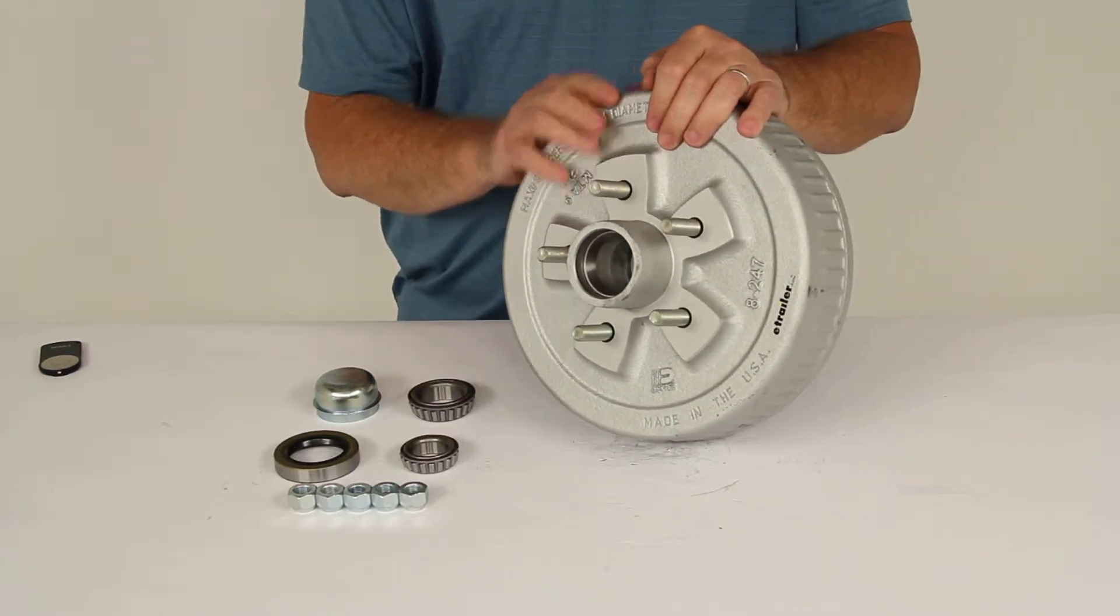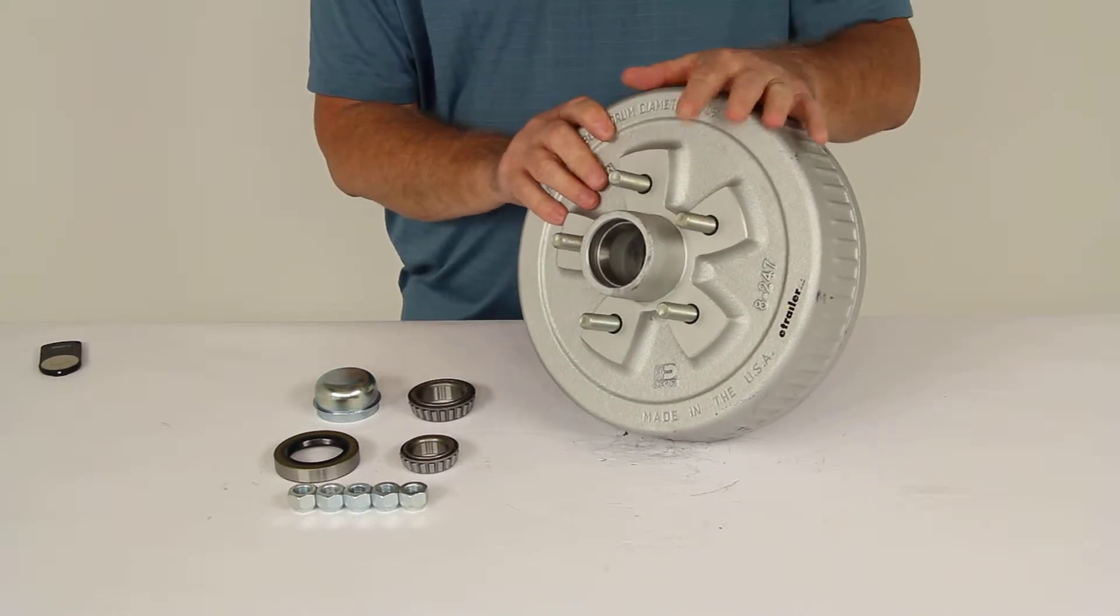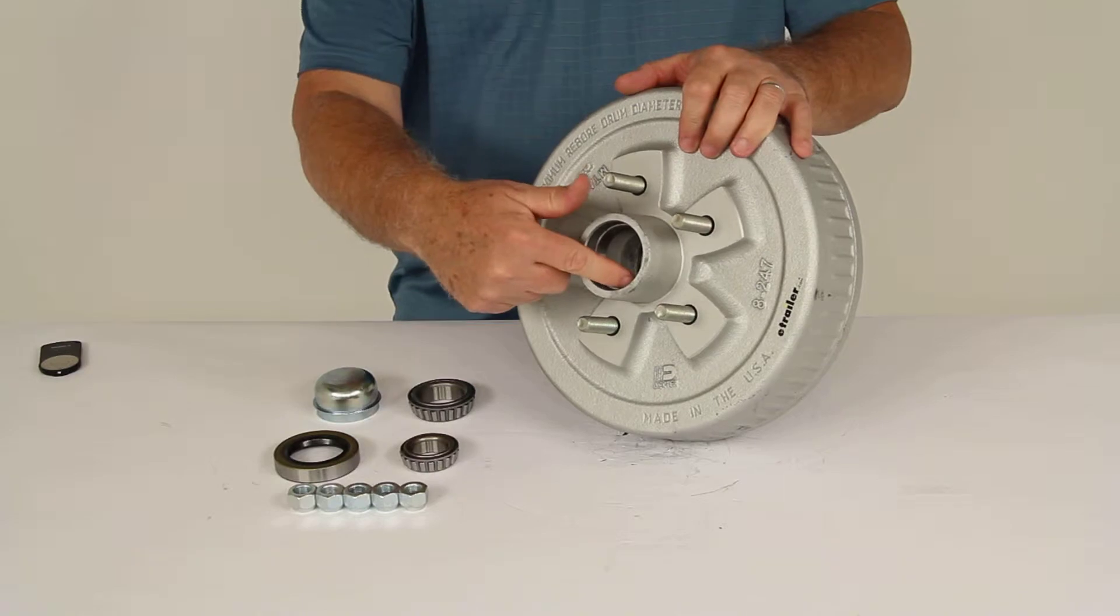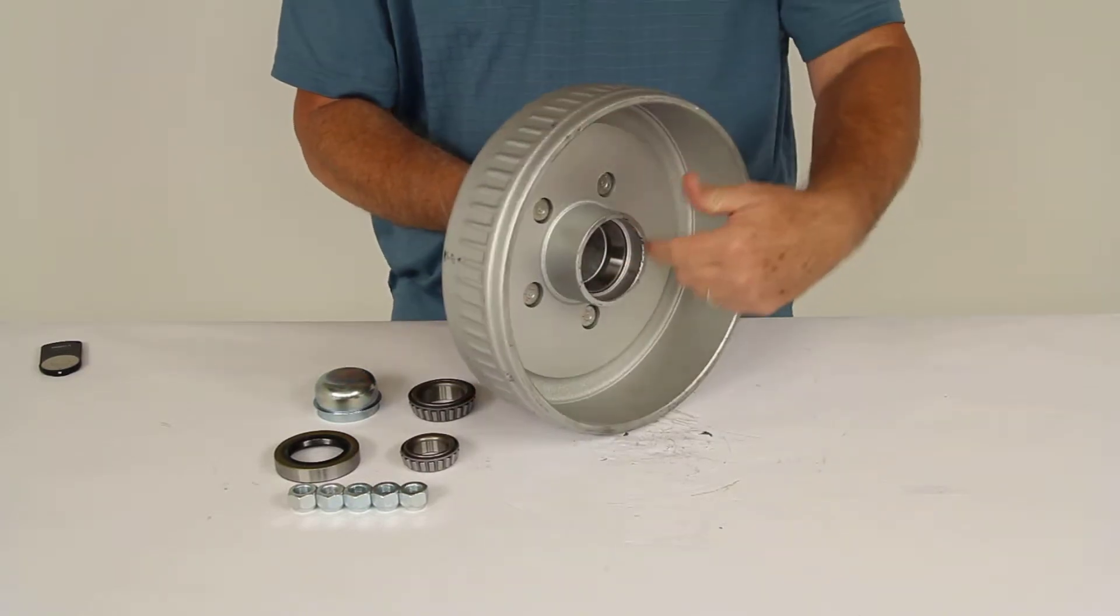Now this part number will include everything shown here. It includes the one hub and drum, the inner and outer bearings. The bearing races are included and are pre-installed into the drum themselves.